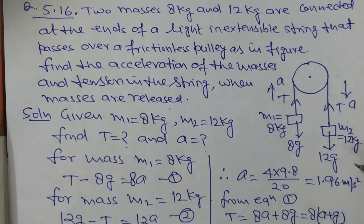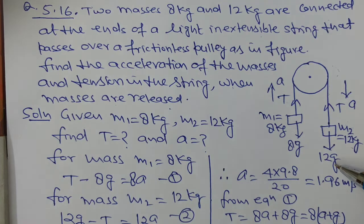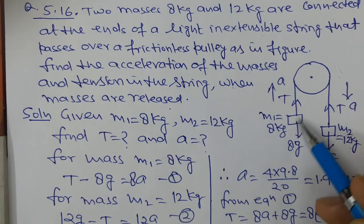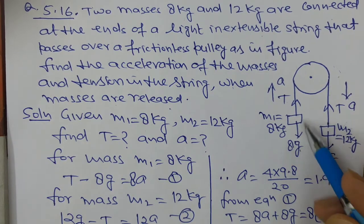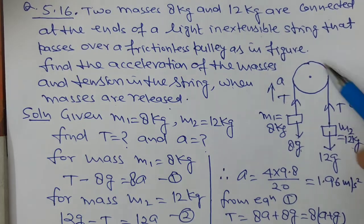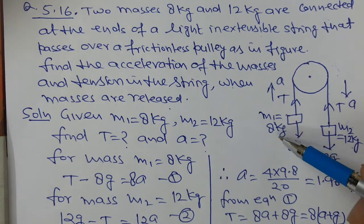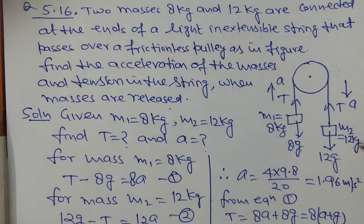The system has a frictionless pulley with a massless inextensible string. Mass M1 equals 8 kg and mass M2 equals 12 kg attached at the free ends. The weight of the 12 kg body acts vertically downward as M2g equals 12g, and tension T acts upward. Similarly for M1, weight is 8g downward and tension T upward. Since the string is one piece, tension is the same throughout. Since M2 is greater than M1, the 12 kg mass moves down and the 8 kg mass moves up.